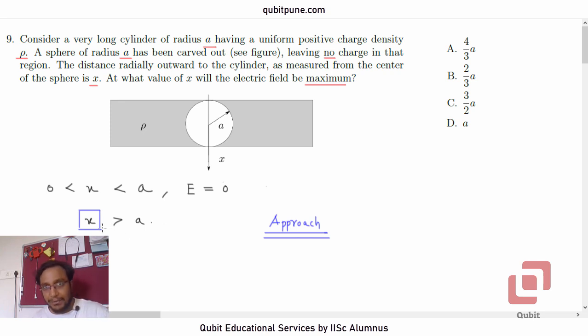If our value of x is greater than A, we are outside the cylinder, which means the cylinder can be treated as a uniform line charge. The whole charge will be concentrated on this particular axis. So we will now require the line charge density.